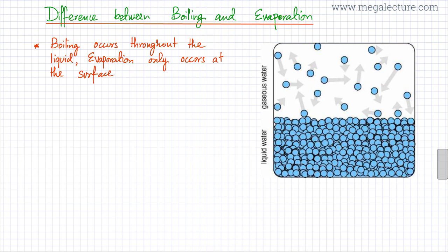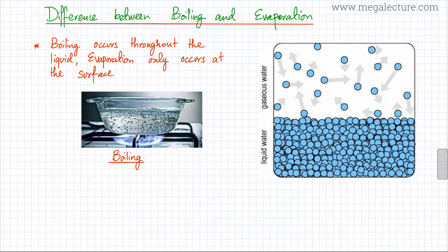There are a few differences between boiling and evaporation. The first one is that boiling occurs throughout the liquid. If you've seen water boiling, then you would have noticed that the entire container containing water is boiling simultaneously.